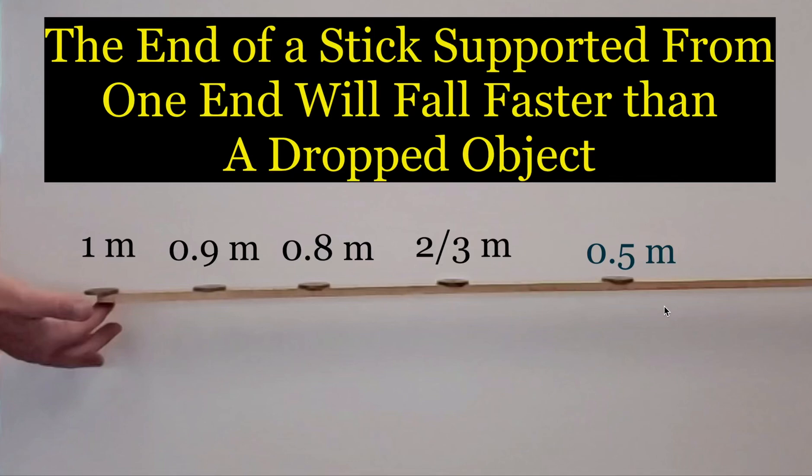All right, this is a quick little video clip of a meter stick that's held on one end over on the right hand side and there's little brass weights that are placed on top. When the stick is released, everything's going to start to fall and what I want you to notice is what happens to the brass weight that's here at two-thirds of a meter.